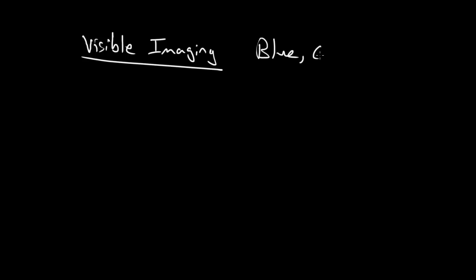In this video, I'll talk about the basic types of visible imaging architectures. By visible imaging, I mean the kinds of wavelengths that your eye can see, like blue, green, and red, or thereabouts.